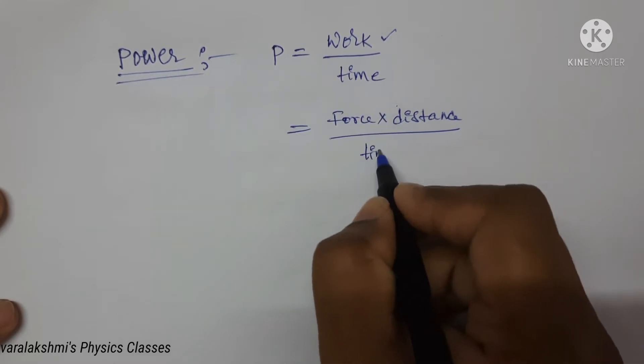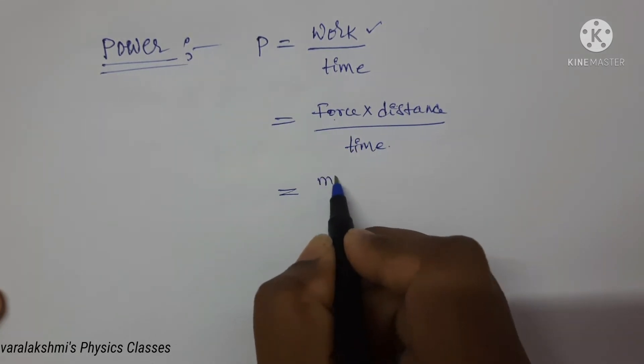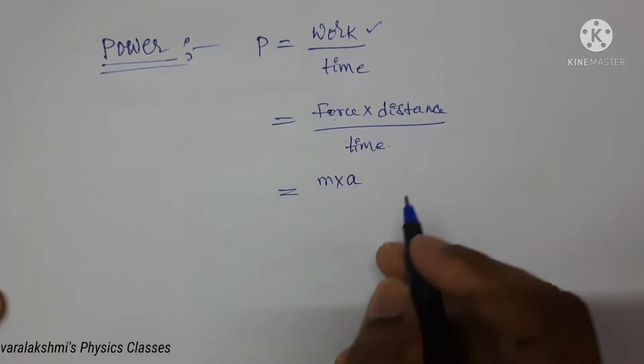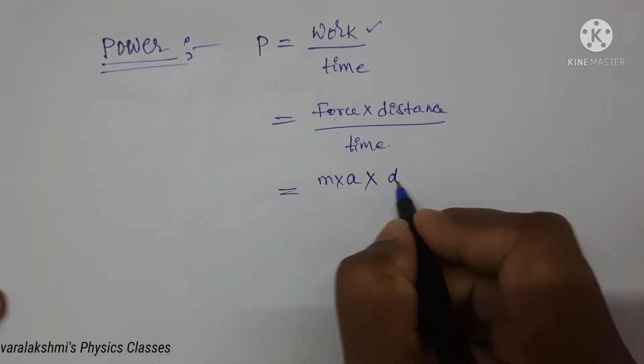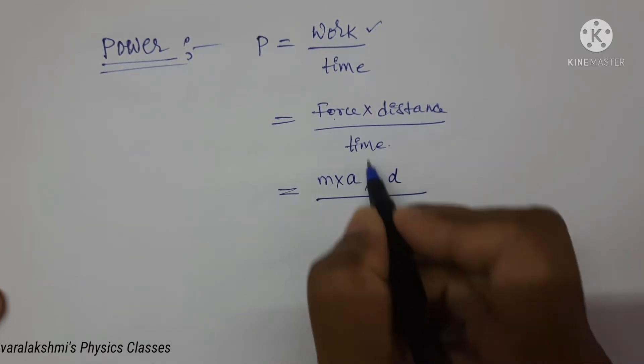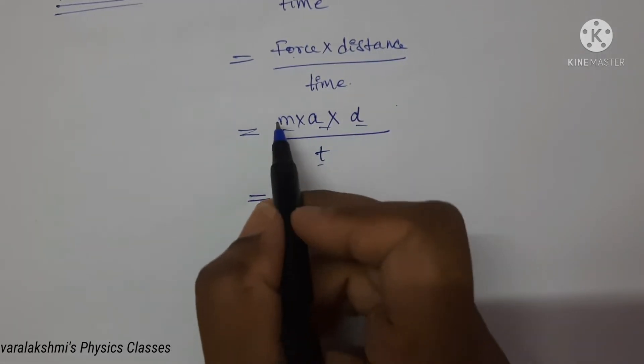Now write the formula for force: force is mass multiplied by acceleration, and here distance is there, so I am writing as d upon time. Now write the SI unit for each of these terms.